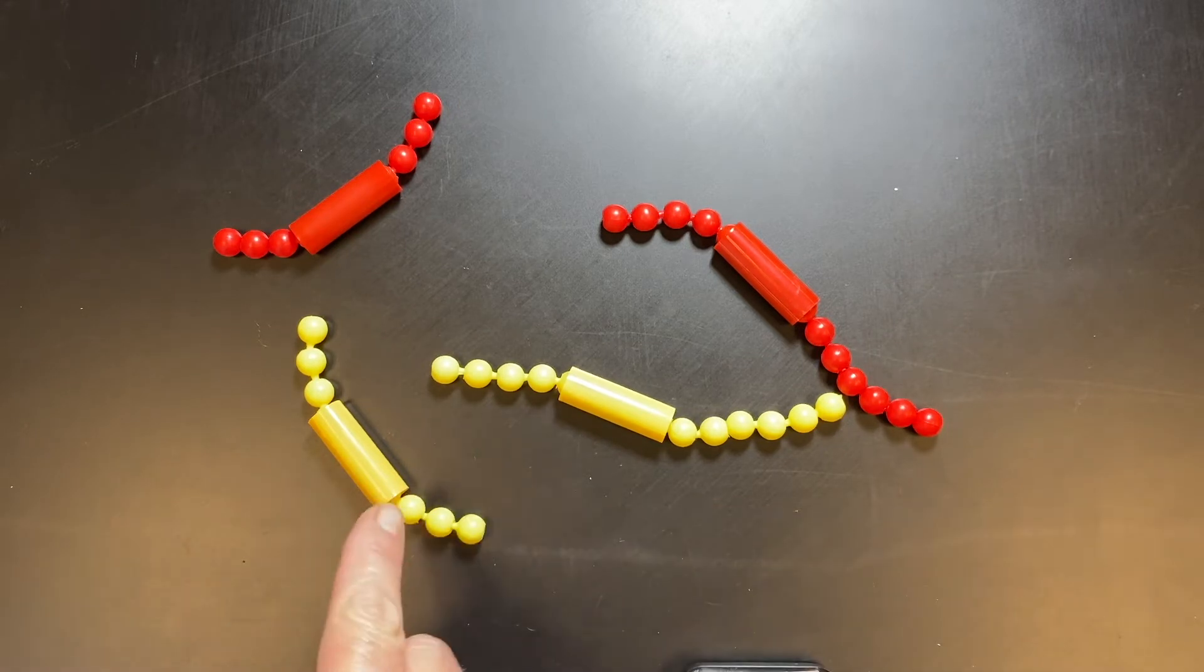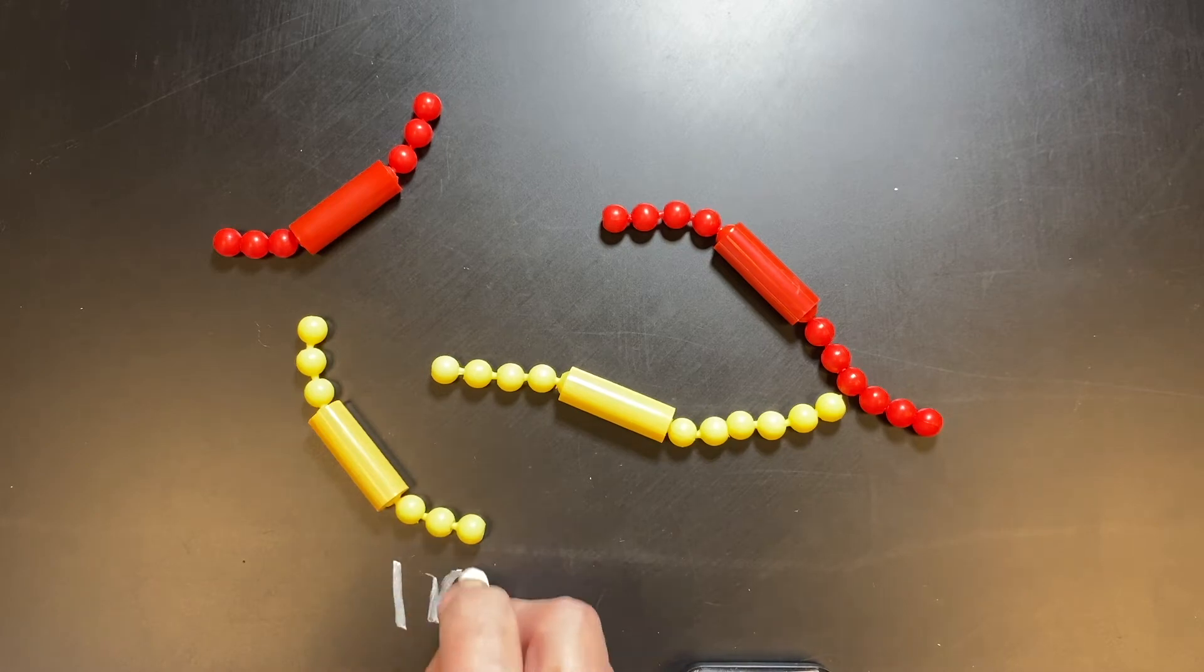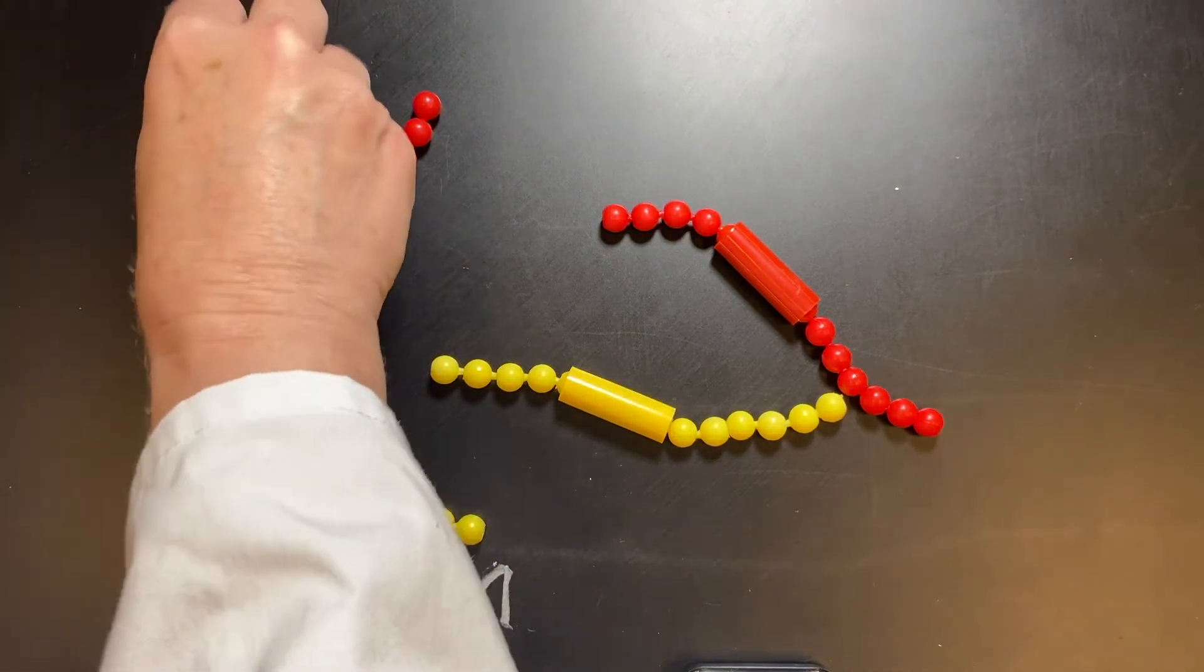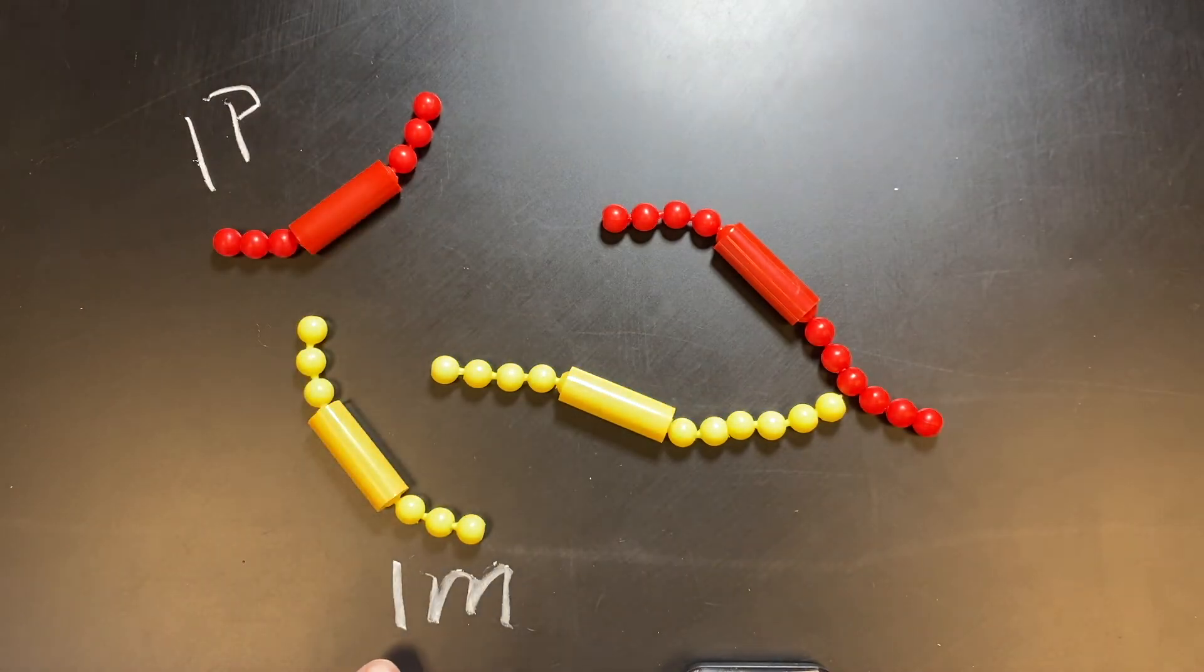In other words, they might have different alleles. So I'm going to name this first one right here. This yellow one is 1M, and this red one right here is 1P. Notice that they're the same size and shape, they just have different colors.